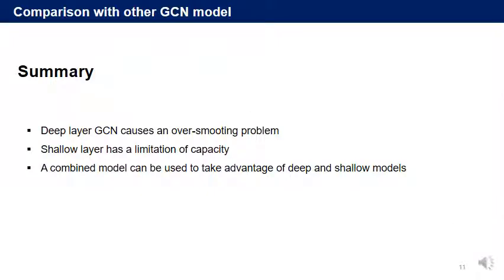In summary, deep layer GCN causes an over-smoothing problem. Shallow layers have a limitation of capacity. A combined model can be used to take advantage of both deep and shallow models. Thank you for listening.